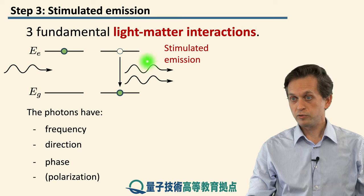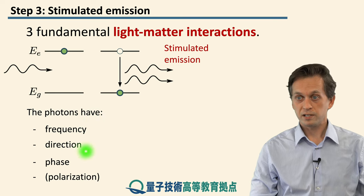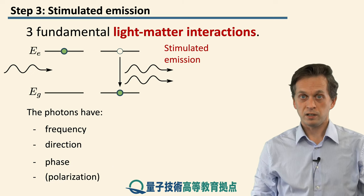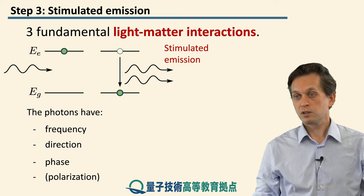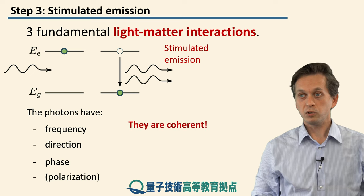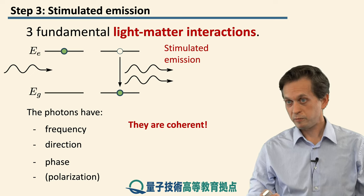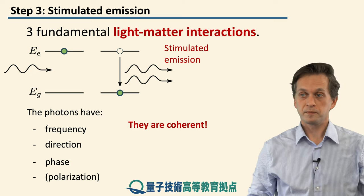These two photons have the same frequencies, they travel in the same direction, they are of the same phase, and they also have the same polarization. So these two photons are coherent with each other. Therefore, stimulated emission produces coherent light.